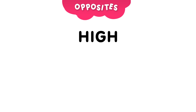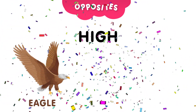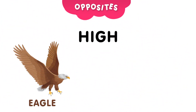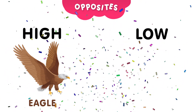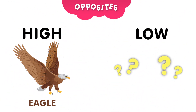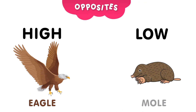Next, we have the word high. Can you guess which animal flies high? The high-flying animal is the eagle. What's the opposite of high? Can you guess? Take 5 seconds to think about it. The opposite of high is low. Can you guess which animal digs low? And the answer is, the mole. Moles dig low in the ground.